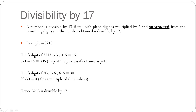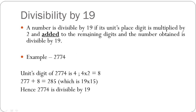Let's look at divisibility by 19. A number is divisible by 19 if its units digit is multiplied by 2 and added to the remaining digits, and the number so obtained is divisible by 19. Let's look at the example 2774. The units digit is 4; multiply by 2 to get 8. Add this 8 to the remaining digits, 277, and you get 285, which is 19 times 15. If you aren't sure, you can repeat the process, but 2774 is divisible by 19.